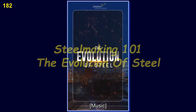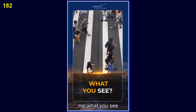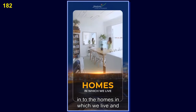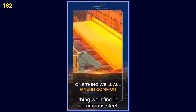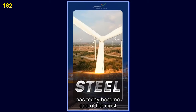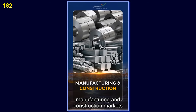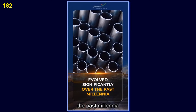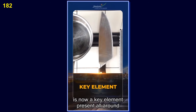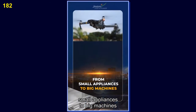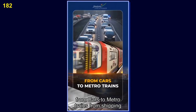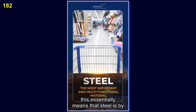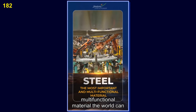This is a short video on the evolution of steel. From the cars we drive to the buildings we work in, to the homes in which we live and countless things in between, the one thing we find in common is steel. Steel has today become one of the most important materials, serving countless manufacturing and construction markets. Steel was a discovery of the Iron Age, but it has evolved significantly over the past millennia. With heavy research and innovation, steel is now a key element present all around us — from small appliances to big machines, from cars to metro trains, from shipping to aviation. Steel is the backbone of growth and is by far the most important and multifunctional material the world can thrive with.